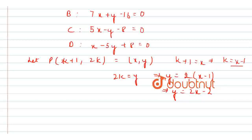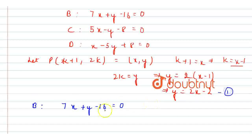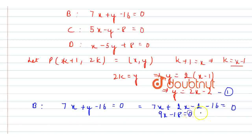Writing down the equation of line B, which is 7x + y - 16 = 0. Substituting y = 2x - 2, it becomes 7x + 2x - 2 - 16 = 0, which gives 9x - 18 = 0, so x = 2. Substituting back, y = 2. So point B has coordinates (2, 2).